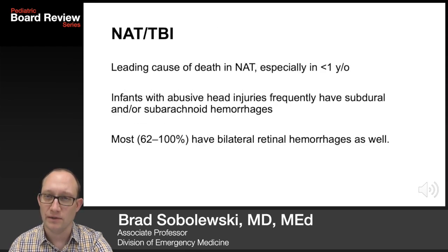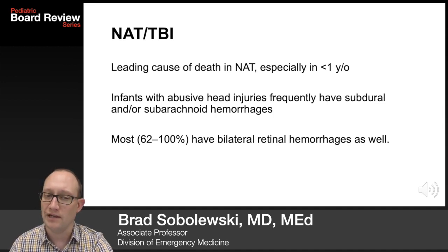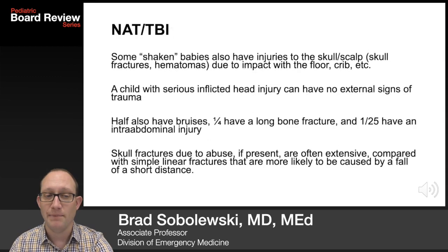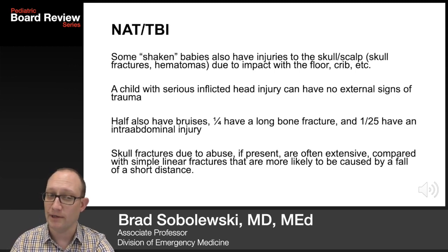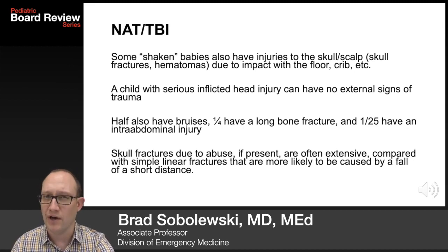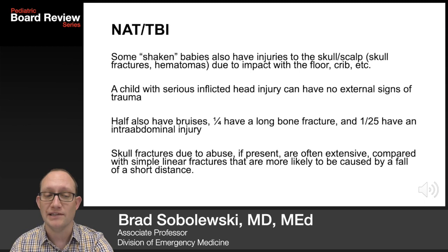Traumatic brain injury in non-accidental trauma is a leading cause of death in children under the age of one. Infants with abusive head injuries frequently have subdural and subarachnoid hemorrhages. Most have bilateral retinal hemorrhages as well. Some babies have injuries to the skull and scalp because of impact with the floor or crib. A child with a serious inflicted head injury can have no external signs of trauma, though half have bruises, a quarter have a long bone fracture, and one in 25 have an intra-abdominal injury. Skull fractures due to abuse, if present, are often extensive and complicated, as compared with simple linear fractures that are most likely caused by a fall of a short distance.